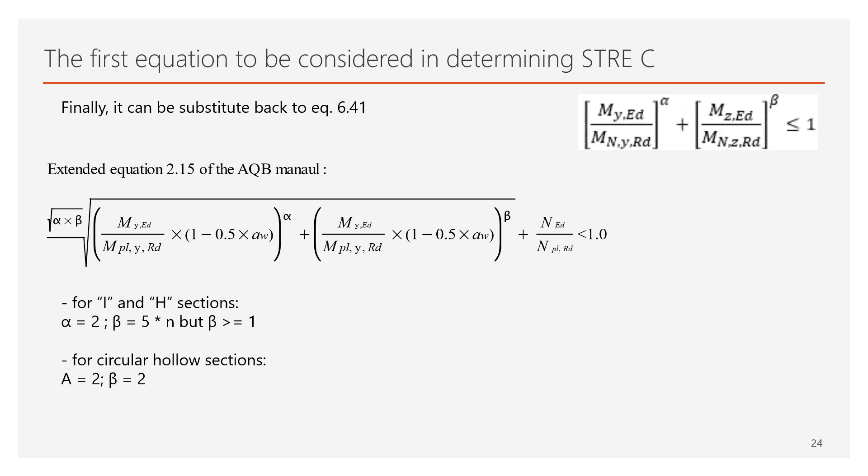However, we are facing with a problem when the NYED over NPLRD ratio, or in other words, the load ratio, is close to 1. Since in that case, the denominator gets close to 0, hence the utilization level yields to an unrealistic value. To get around the problem, both sides of the equation will be multiplied with 1 minus N, then N will be added to both sides of the equation.